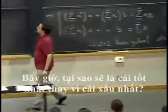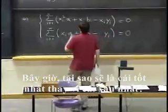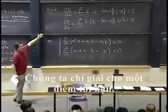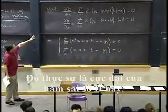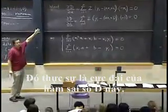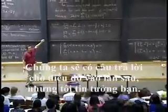Now, why is that going to be the best one instead of the worst one? We just solved our critical point that could actually be a maximum of this error function d. Well, we will have actually the answer to that next time.